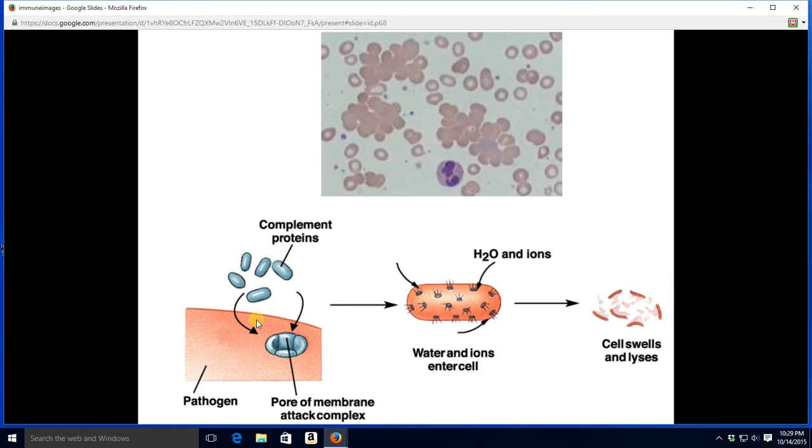Here is a picture of some agglutinated red blood cells here. Let's check out those clumps. Here we see the activated complement forming a membrane attack complex, poking a hole into a bacterial cell. The bacterial cell then swells and lyses.